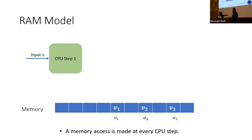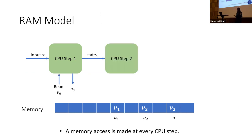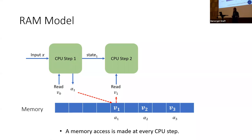The RAM model consists of CPU step circuits, each a small circuit of size polylog(t) where t is the running time. The flow is: CPU step circuits take a state and read a value from memory, then output a value to be used by the next CPU step.